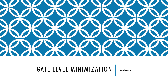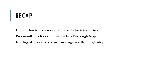Hello everyone. This is the second lecture in the gate level minimization series using Karnaugh map. In the previous class, we discussed what a Karnaugh map is and why it is required. We also looked at how to represent a boolean function in a Karnaugh map, and we saw the way in which the row and column headings are named according to the gray code.